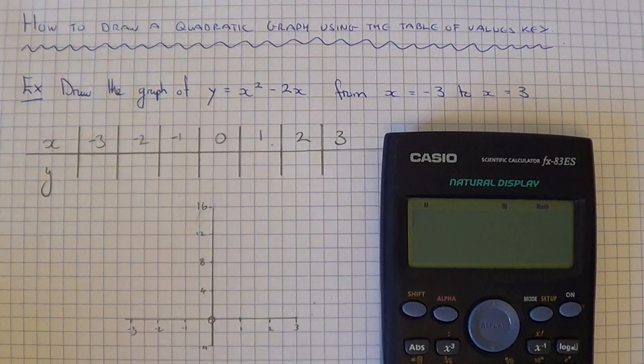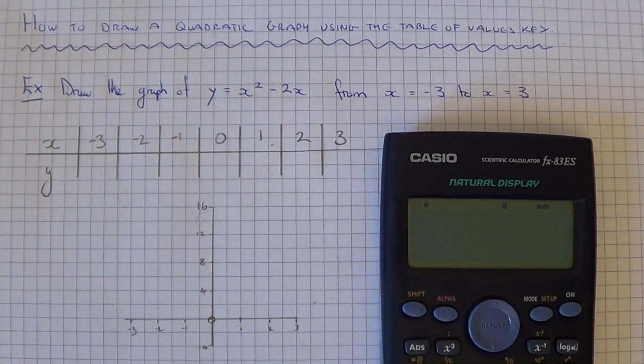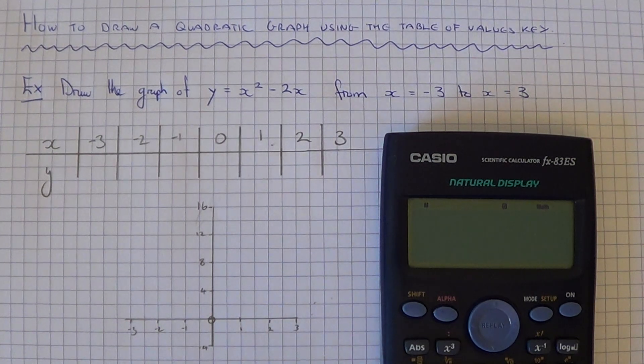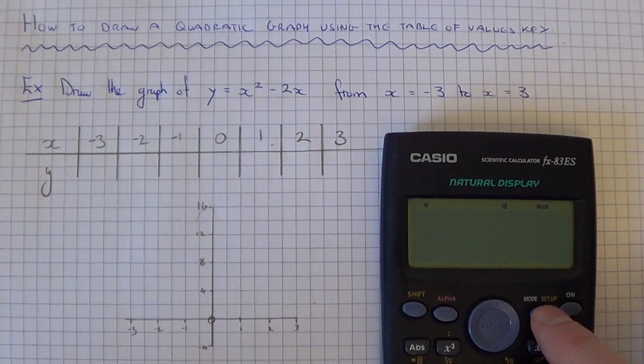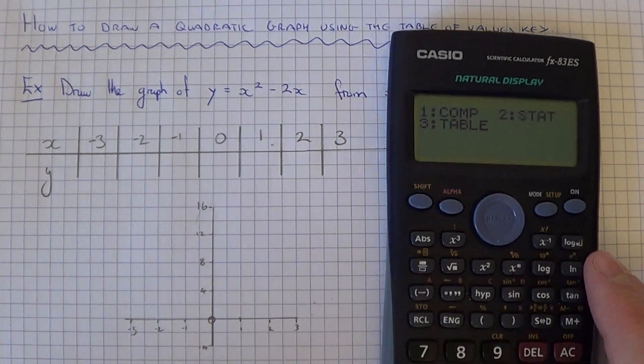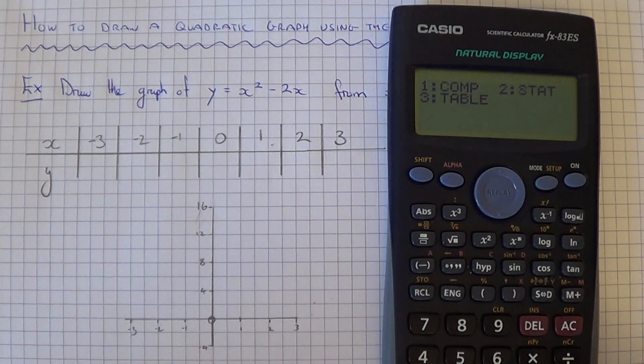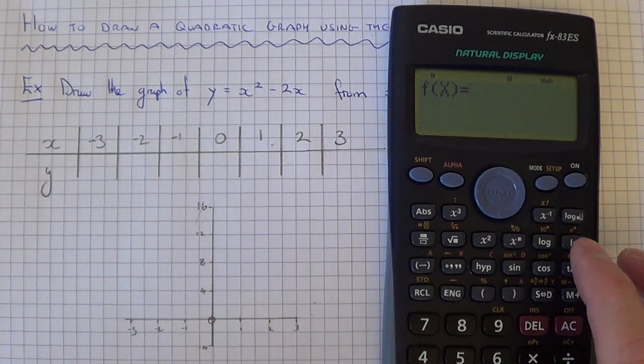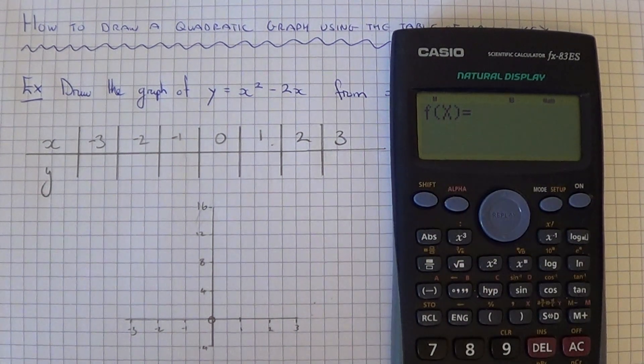We're actually going to cheat and use the table of values key on the Casio calculator. To get the table of values up on your scientific calculator, press mode and you want the table which is number 3. Press 3 and you'll see this f bracket x come up.